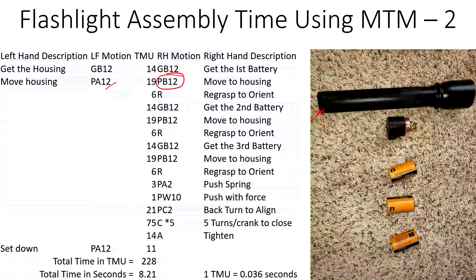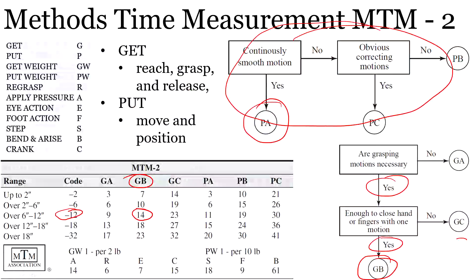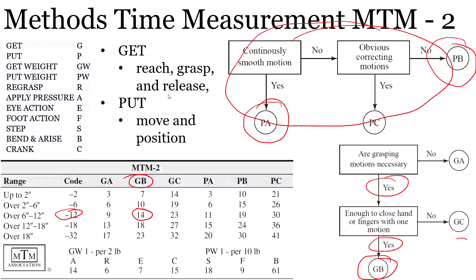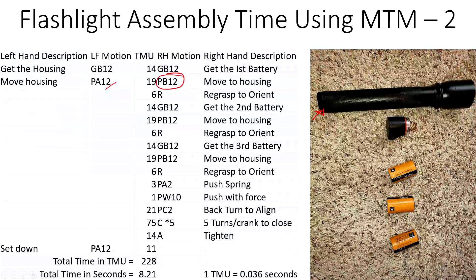For the battery, it's a little different when moving it to the housing — that's PB12. Looking at the put algorithm: continuously smooth motion? No, because I'm checking whether it's the positive or negative side, so I'm constantly correcting. That makes it PB, not PA. Looking at the table, PB12 reads as 19 TMU.